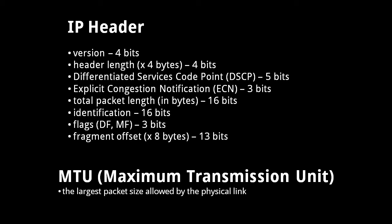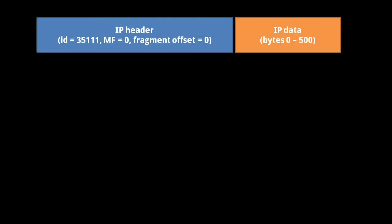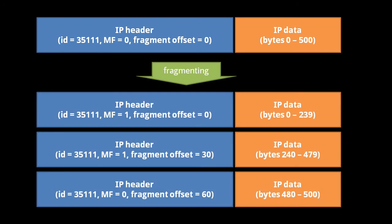After these flags, we have the fragment offset field, which indicates the position of the first data byte in the original packet as a multiple of 8 bytes. For example, say we have an unfragmented packet with 500 bytes and the ID number 35111. Because it's unfragmented, the more fragments flag and the fragment offset are both set to zero. If this packet gets fragmented into three smaller packets, all three share the original ID 35111, and all except the last fragment have their MF flag set to one. The first fragment represents bytes 0 to 239, so its offset is 0. The second represents bytes 240 to 479, so its offset is 30 (since 30 × 8 = 240). The last represents bytes 480 to 500, so its offset is 60 (since 60 × 8 = 480).